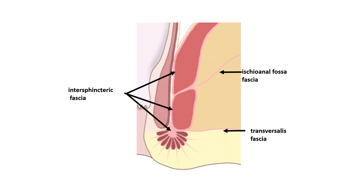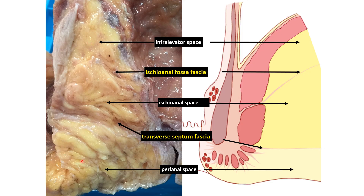Anogenital fascia: the intersphincteric fascia lies between the two sphincters. The fascia running transversely between the superficial and subcutaneous parts is the transverse septum fascia. The oblique fascia dividing the lateral space into the upper infralevator and lower ischioanal fossa is the ischioanal fossa fascia. In the cadaveric dissection, we can see the transverse septum fascia and the ischioanal fossa fascia — the oblique fascia — dividing the space into ischioanal space below and infralevator space above.